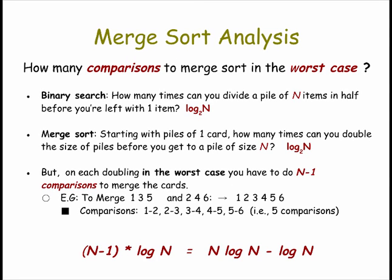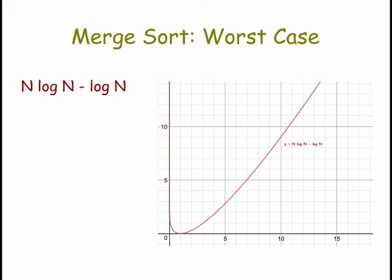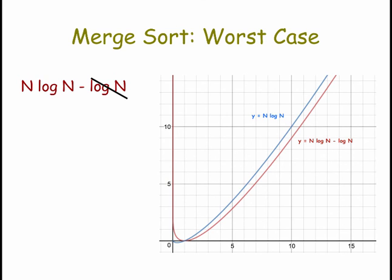So to summarize, to go from piles of one card each to a single pile of n cards in order, we have to do log n merges, but on each merge we have to do n minus one comparisons. And that leads to this expression here: n minus one times log n overall. And if you multiply that out, you get n log n minus log n. And again, just as we did with bubble sort, we want to look at the abstract version of this expression. And so this is the graph for n log n minus log n, but notice what happens when we just cross off the log n term. It doesn't change the shape of the graph at all. It shifts it over a little bit to the left, but overall it characterizes the behavior of the merge sort.